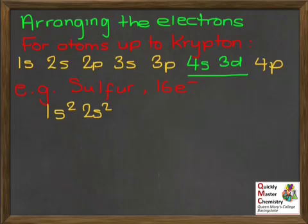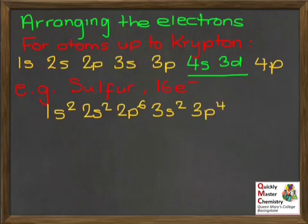What's next? Next is the P subshell of shell 2, and P subshells always hold up to six electrons. We said we had 12 left to place, so we can completely fill that 2P subshell. Six electrons go into it. We've now placed 10 electrons, we've got a further six to place. What comes after 2P? We move on to the third shell and its S subshell, the 3S. S subshells can always hold two electrons, so we're going to put two in there and write 3S2. We've now placed 12 electrons, just four left. What comes next? The 3P subshell. P's can hold up to six, so all of our remaining four can go into the 3P, and that's sulfur completed.